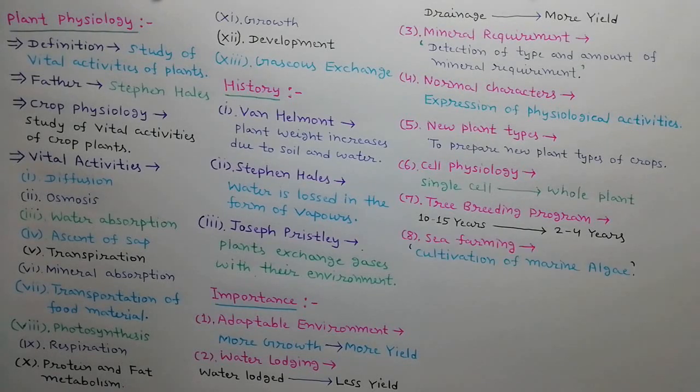By using the knowledge of plant physiology, sea farming can be established as a main industry. For example, by changing the behavior and growth structure of marine algae, we can cultivate them easily.